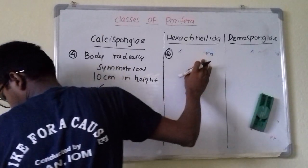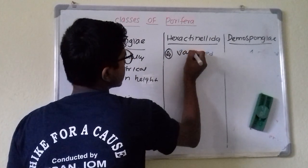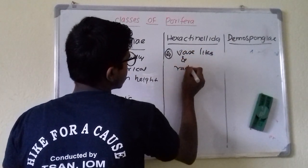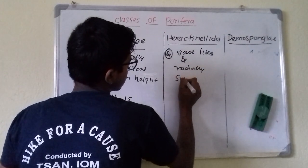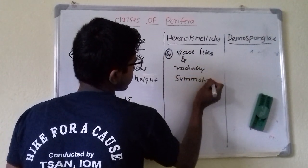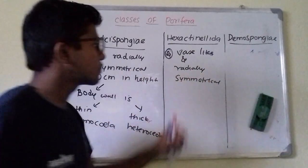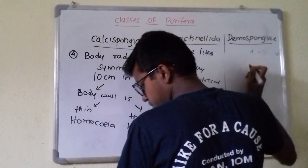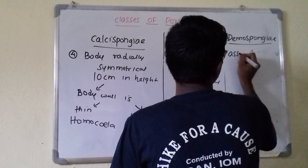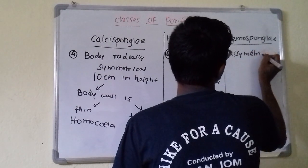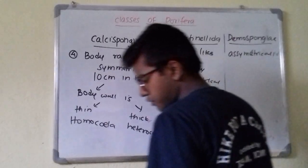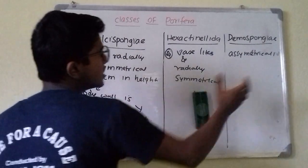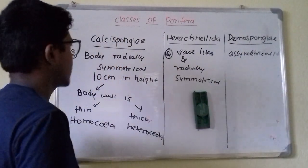In Hexactinellida, the body is vase-like and radially symmetrical. Whereas Demospongia is asymmetrical — the body cannot be divided into any two equal halves by any plane — and the body is massively enlarged.